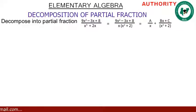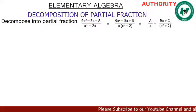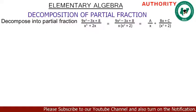Now splitting into partial fractions, we write A/x plus, since (x² + 2) cannot be factorised further, we write (Bx + C) / (x² + 2).